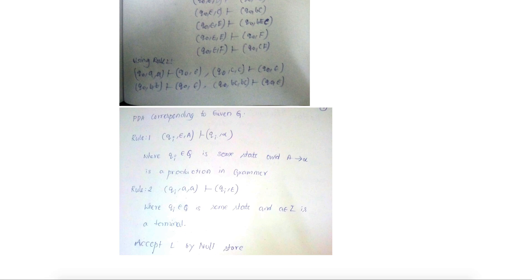The PDA corresponding to given G, rule 1 is: q sub i epsilon A plus q sub i theta, where q sub i epsilon q is some state, and A to theta is a production in grammar.